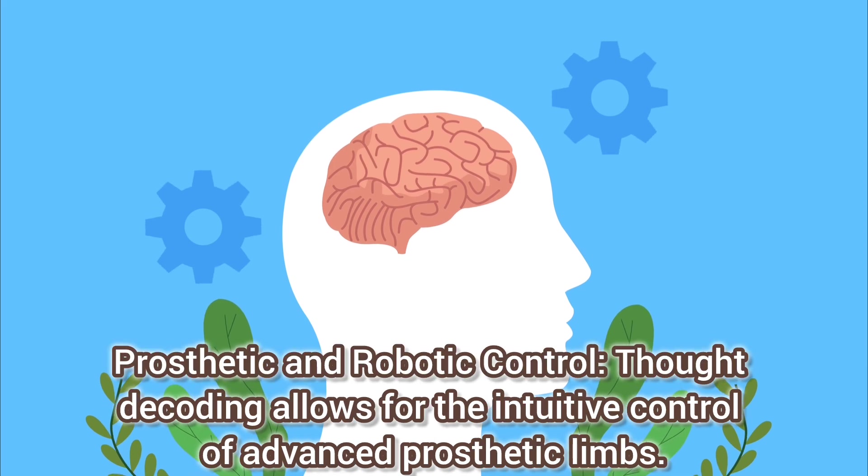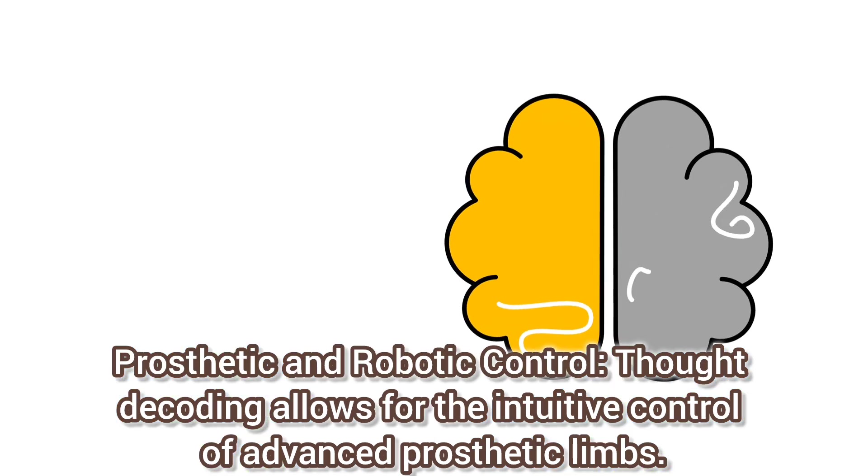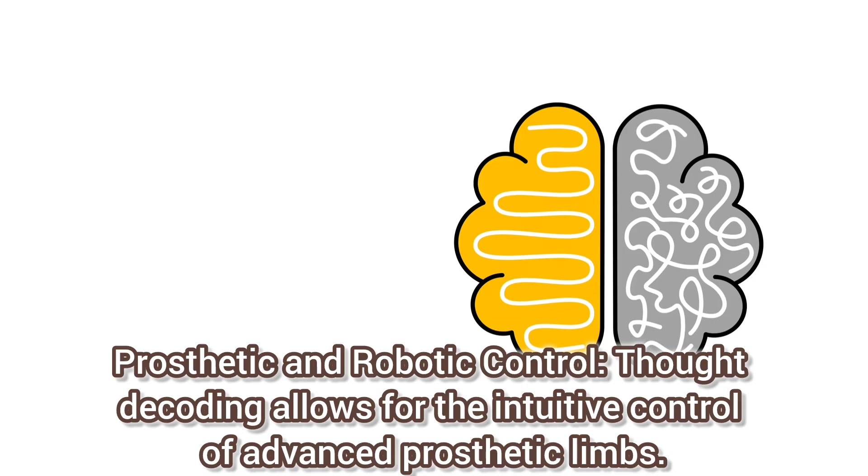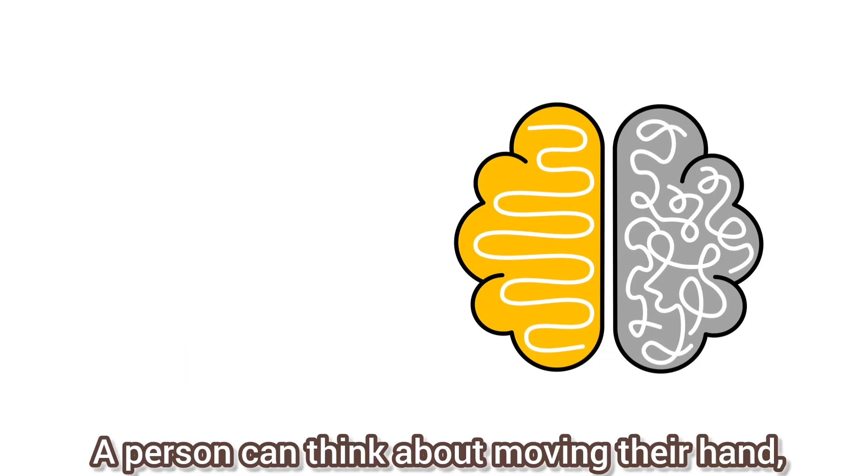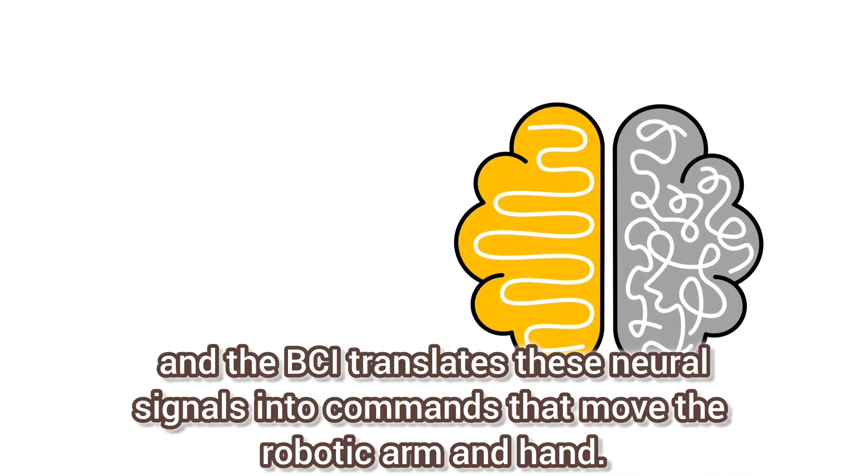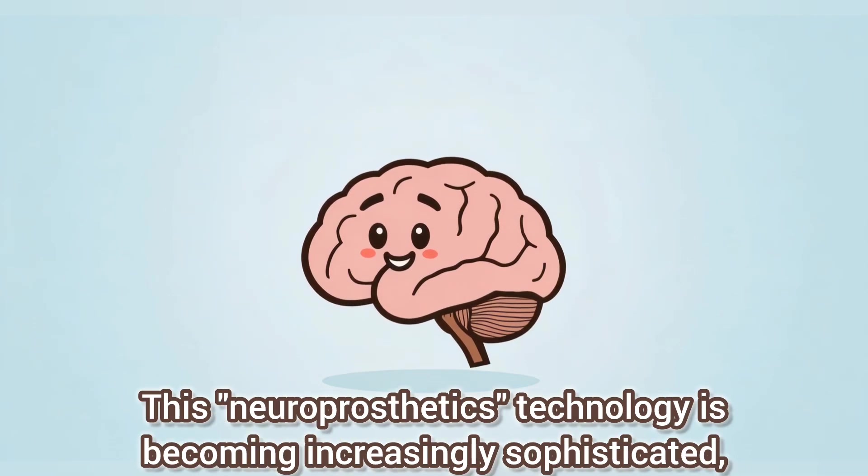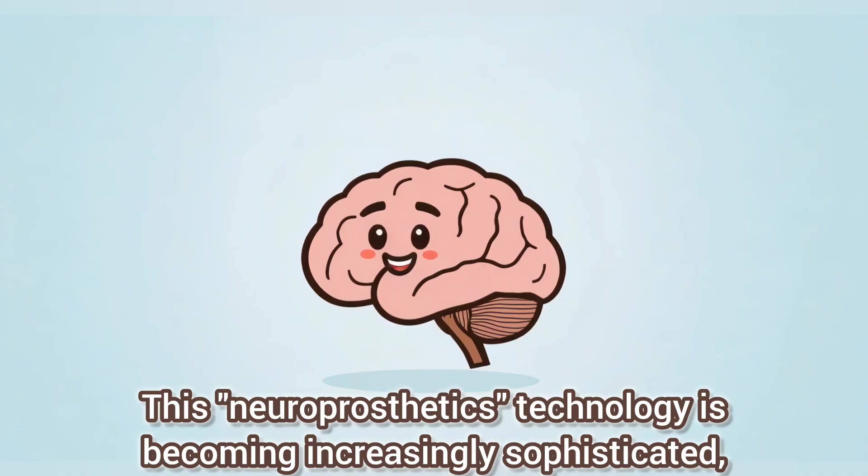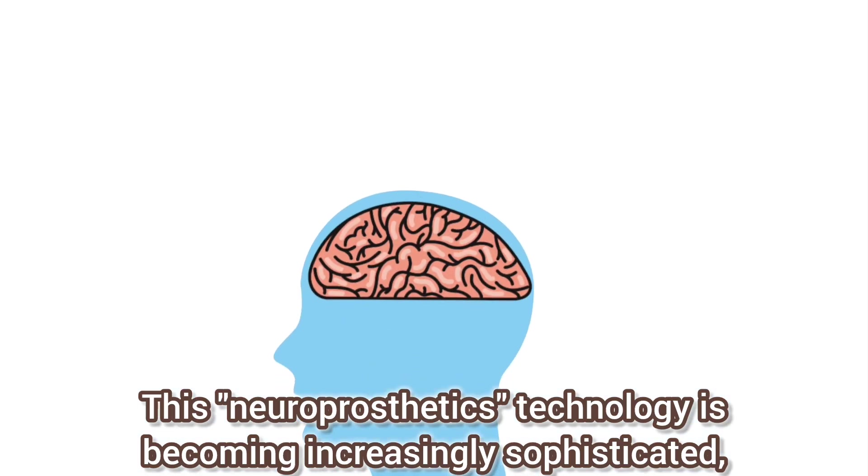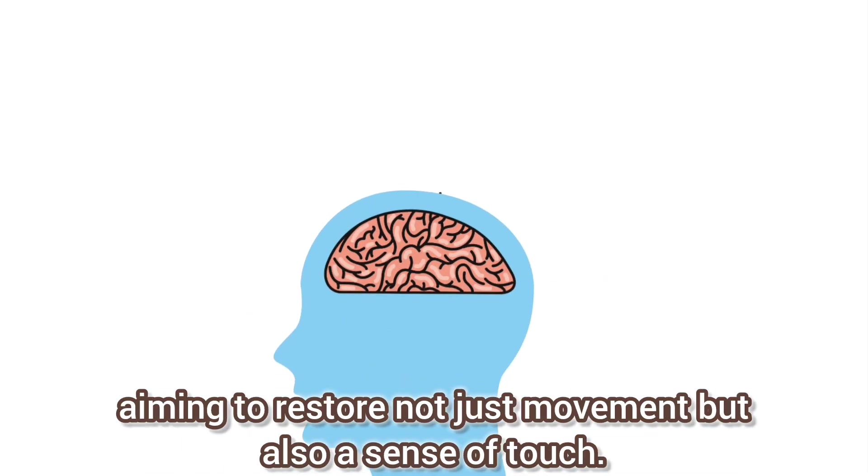Prosthetic and robotic control: thought decoding allows for the intuitive control of advanced prosthetic limbs. A person can think about moving their hand, and the BCI translates these neural signals into commands that move the robotic arm and hand. This neuroprosthetics technology is becoming increasingly sophisticated, aiming to restore not just movement but also a sense of touch.